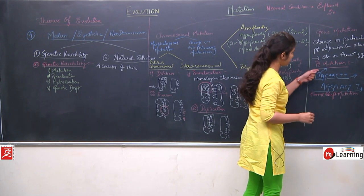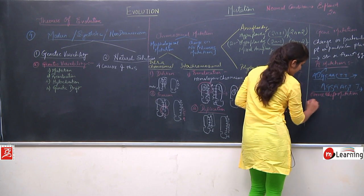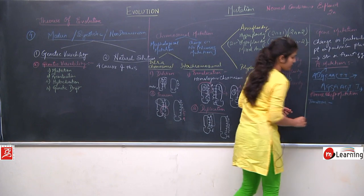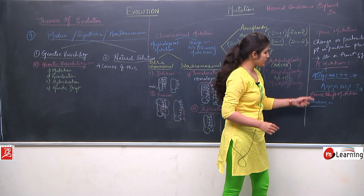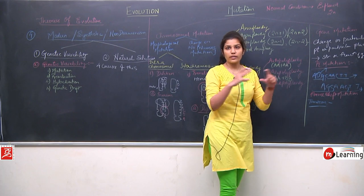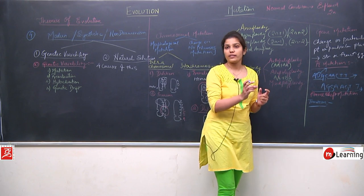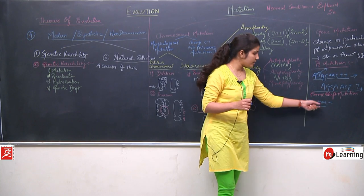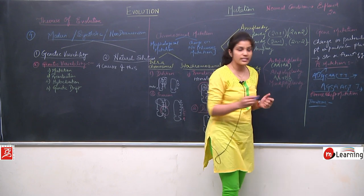Another type within point mutation is transition. When one purine is replaced by another purine, or one pyrimidine is replaced by another pyrimidine in the nucleotide chain, it is called transition. In transversion, one purine is replaced by a pyrimidine or one pyrimidine is replaced by a purine.